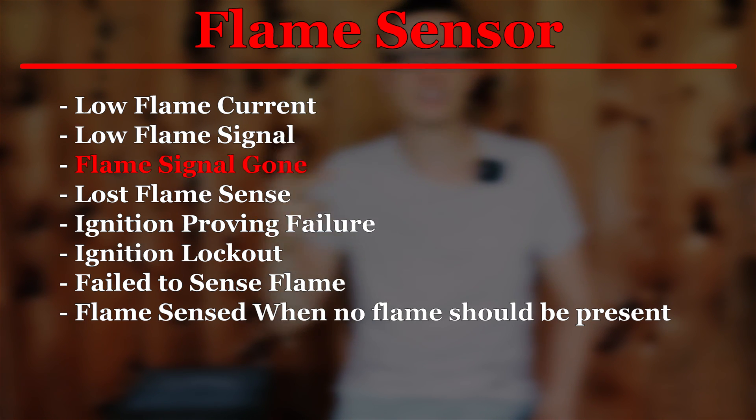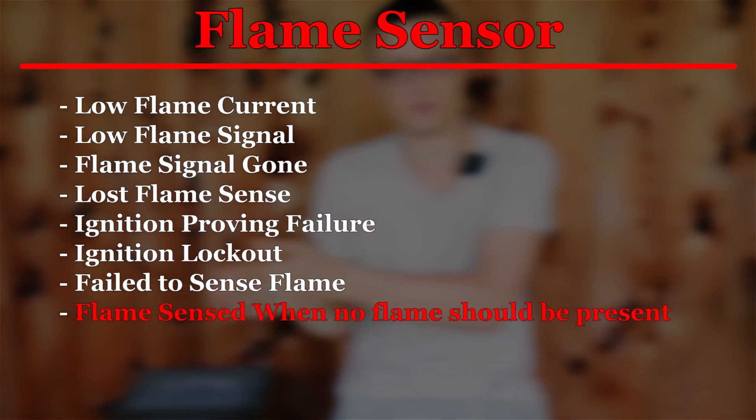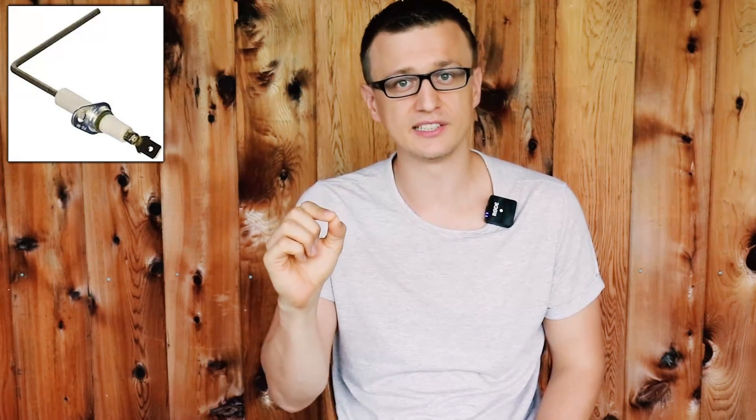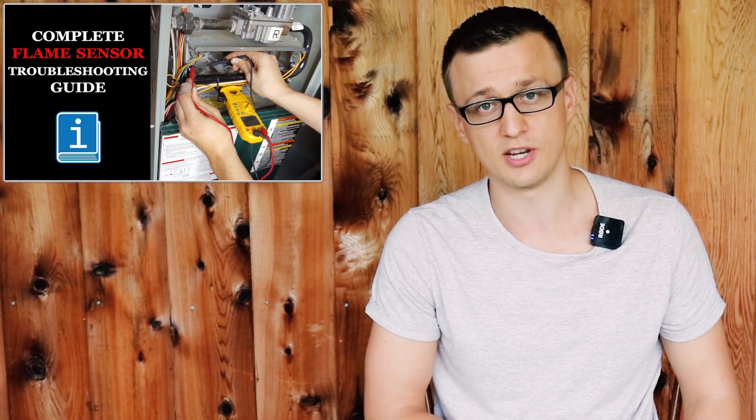The first error code I want to cover is the most common problem I run into, and luckily this one is usually the most easiest problem to fix — and that is the flame sensor error code. On different furnaces this error code will be worded differently, but here are some examples: low flame current, low flame signal, flame signal gone, lost flame sense, ignition proving failure, ignition lockout, failed to sense flame, flame sensed when no flame should be present, and so on. Most flame sensor error codes will be very similar to one of those phrases. If you are seeing a flame sensor error code, there's a good chance that all you have to do is simply clean the flame sensor rod. If you're not sure how to do that, I have a video on how to find and clean the flame sensor on a furnace. And if cleaning the flame sensor does not do the trick, I have another video where I go deeper into those flame sensor issues and talk about other possibilities that could cause this error code to pop up.